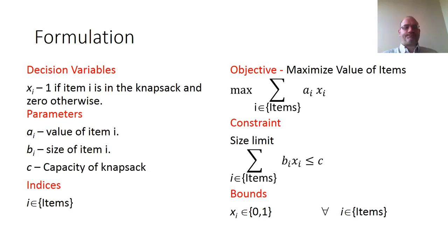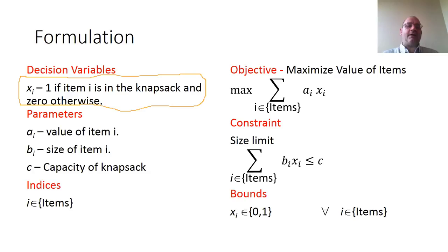The formulation of the knapsack is fairly simple. We have one decision variable, x sub i, and that variable is 1 if item i is in the knapsack and 0 otherwise. Our parameters are a sub i, which is the value of item i; b sub i, which is the size of item i; and c, which is the capacity of the knapsack.